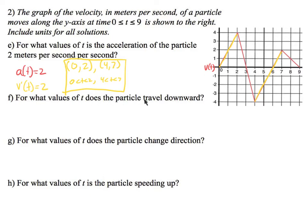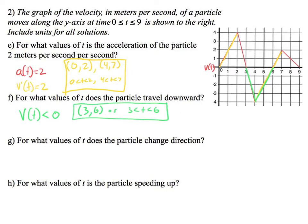For what values of t is the particle traveling downward? Remember, this problem has the particle going up and down on the y-axis, so downward means negative velocities. We're looking for velocity less than 0. Looking at the graph, the spots in green are where the velocity function is negative. That would be from 3 to 6 — those are the time frames in seconds at which it's going downward.